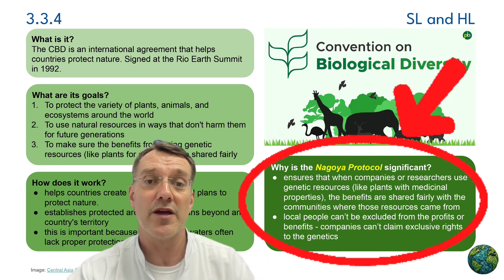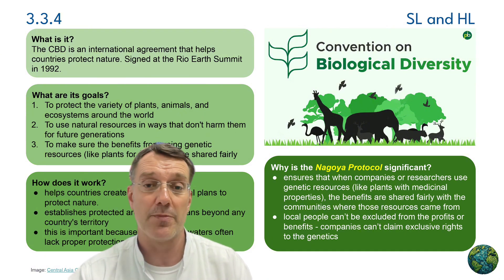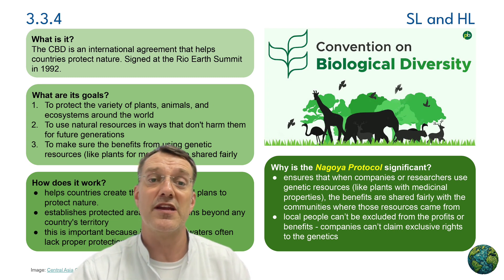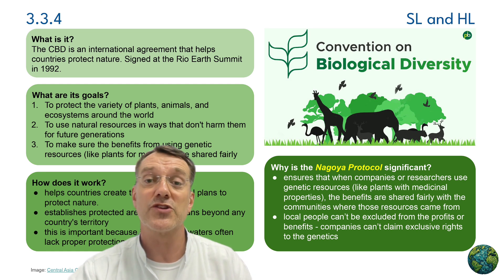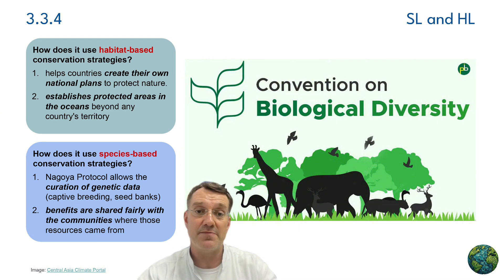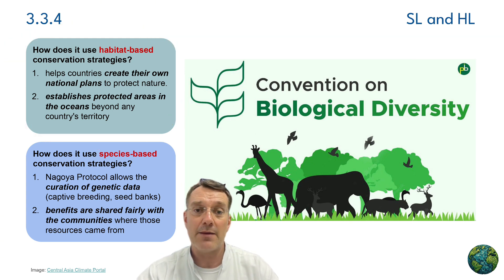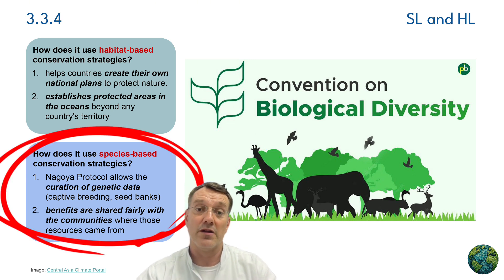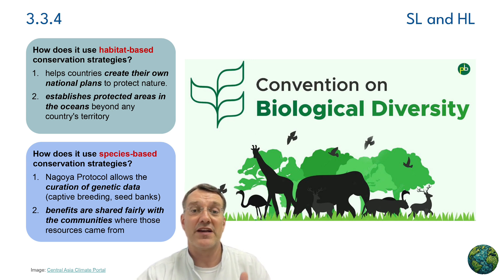A key component of the CBD is the Nagoya Protocol, which ensures that when companies or researchers use genetic resources like plants with medicinal properties, the benefits are shared fairly with the communities where those resources came from. This prevents biopiracy, where local people are excluded from the profits of their traditional resources. The CBD uses both habitat-based and species-based conservation strategies, respecting the rights and knowledge of local communities.